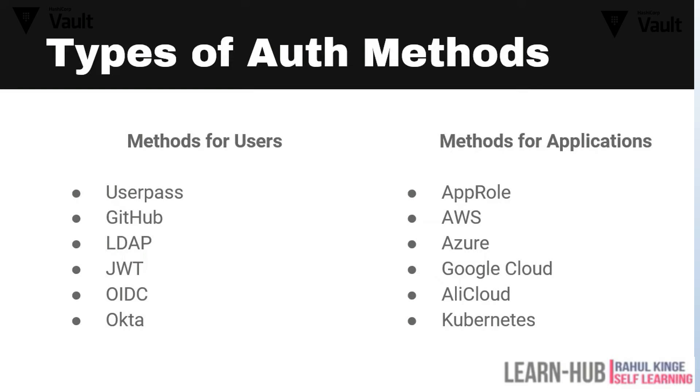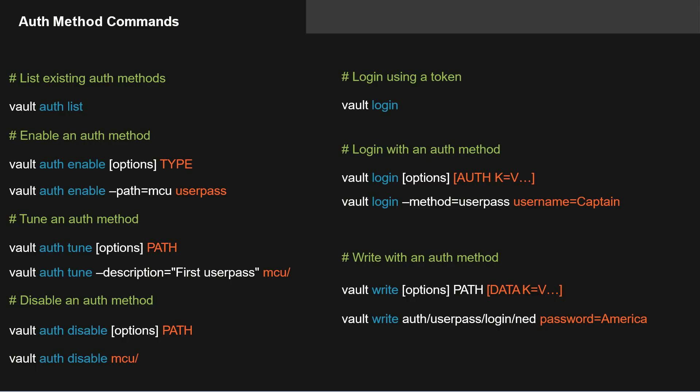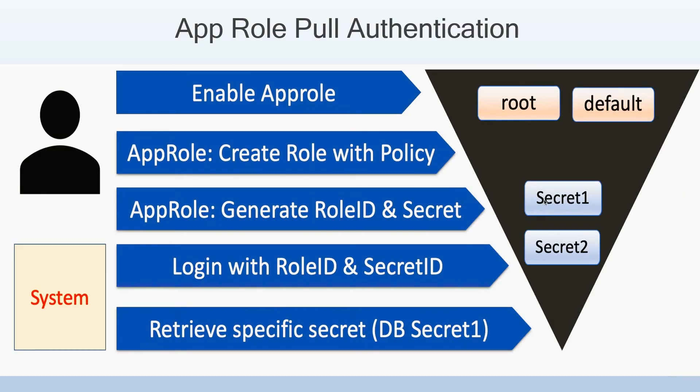These are the CLI commands you generally use for auth methods: how you first enable it, then tune it, disable it, and so on.